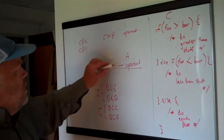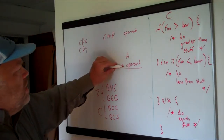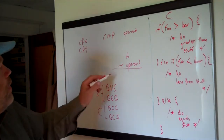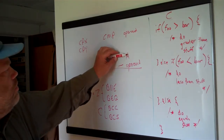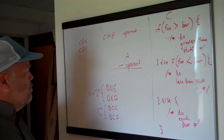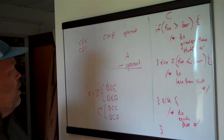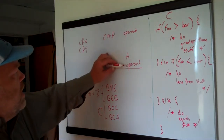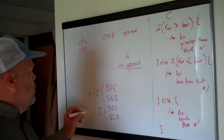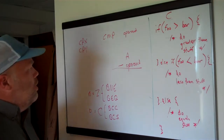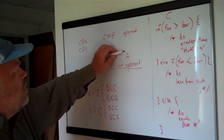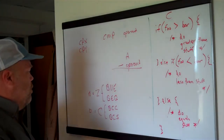If the accumulator minus the operand is zero, it sets the zero flag to one. If the accumulator minus the operand is not zero, it clears the zero flag. If the result is a negative number — meaning if it needed to carry — then the carry flag gets cleared. And if the accumulator is greater than or equal to the operand, so it's not a negative number, then the carry flag is set.